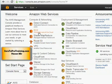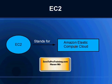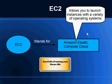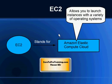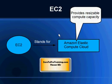EC2 basically stands for Elastic Compute Cloud - two C's, one in 'Compute' and one in 'Cloud.' EC2 is one of the types of services that Amazon provides. EC2 means you can launch instances with a variety of operating systems like Linux or Windows, and you can do that in a matter of minutes.